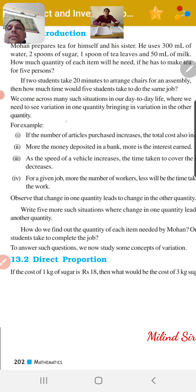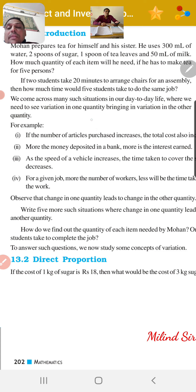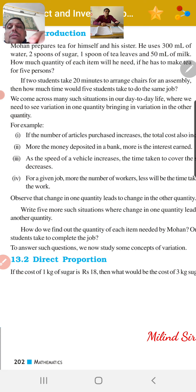If two students take 20 minutes to arrange chairs for an assembly, then how much time could five students take to do the same job?